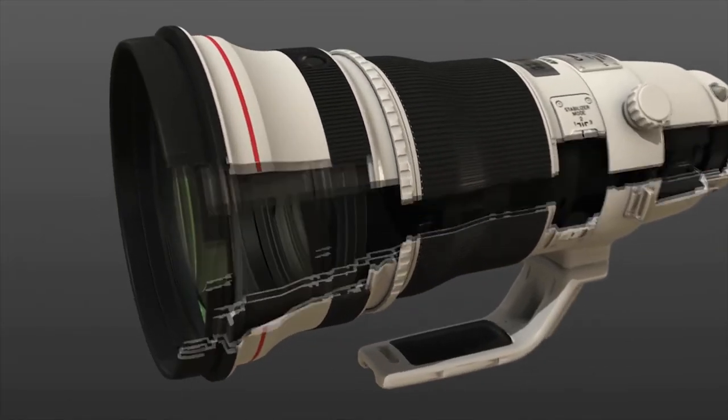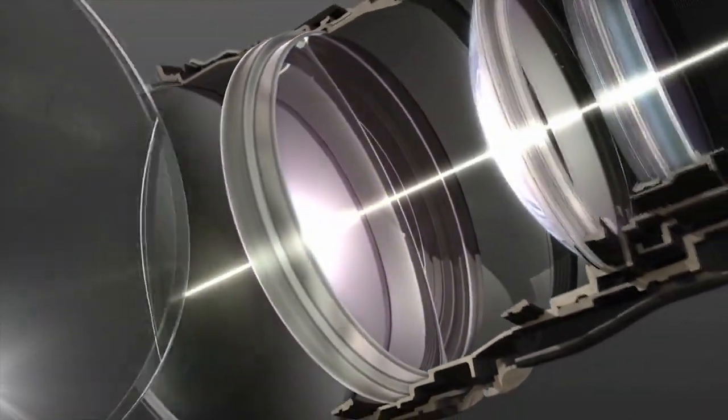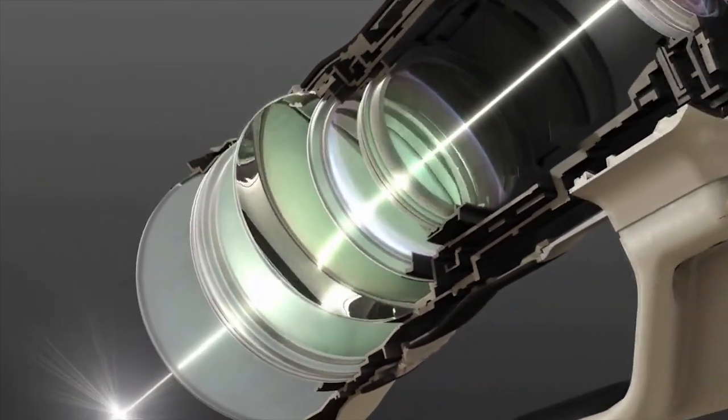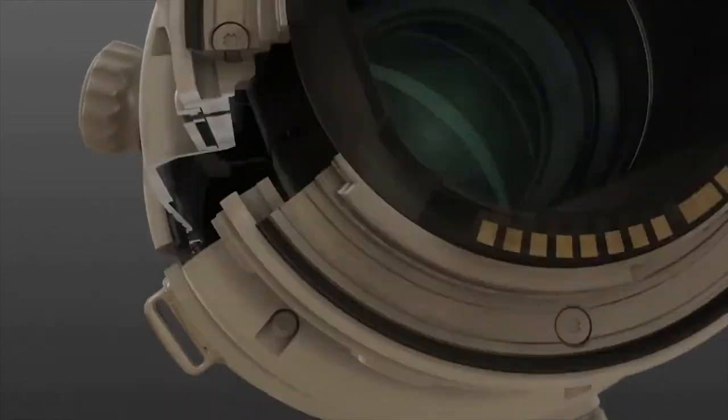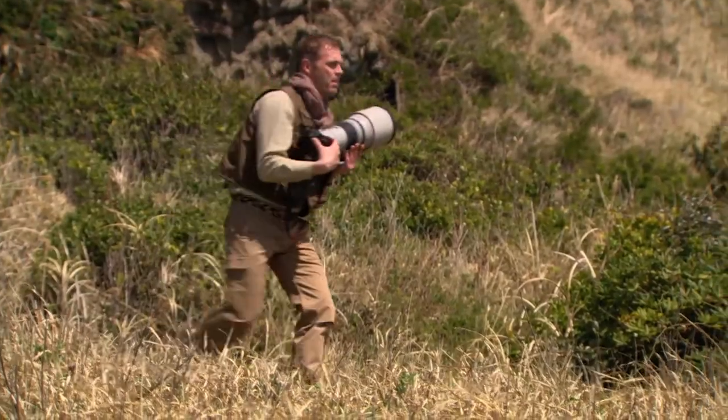Canon's latest 400mm super-telephoto lens utilizes two fluorite lens elements to deliver high image quality in a lightweight design, realizing dramatic improvements in both operability and functionality.